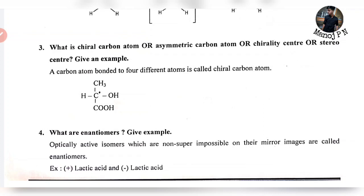What I do: if you have a carbon atom bonded to four different atoms, that is known as a chiral carbon atom — also called asymmetric carbon atom.